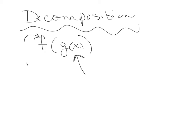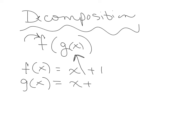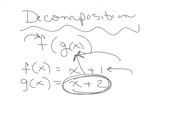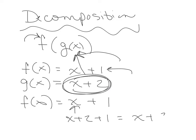So let's say we had f of x equals x plus 1 and g of x equals x plus 2. We're putting g of x inside f of x, so we take g of x and everywhere there's an x in f of x we put x plus 2. Everywhere we see the x we write x plus 2, and then we just simplify, so f of g of x equals x plus 3. This is composition — decomposition is pulling those two things apart.